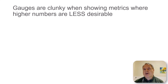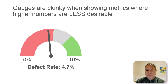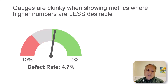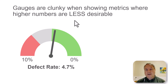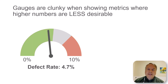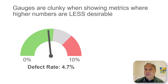Gauges are also kind of clunky when showing metrics where higher numbers are less desirable, like defect rate. Obviously we want the defect rate number to be as low as possible. Using the typical gauge coloring doesn't really make sense because as defect rate gets lower it's going to go red, or if it gets higher it's going to turn green — the opposite of what we want. We could flip it around so the needle going right means green, but then the needle going right means decreasing, which is the opposite of what people would expect. The other possibility is to flip the colors, so going down turns green and going up goes red — which is good — but now this gauge operates differently from all the others on the dashboard because the colors are inverted, making it a little slow to visually interpret.